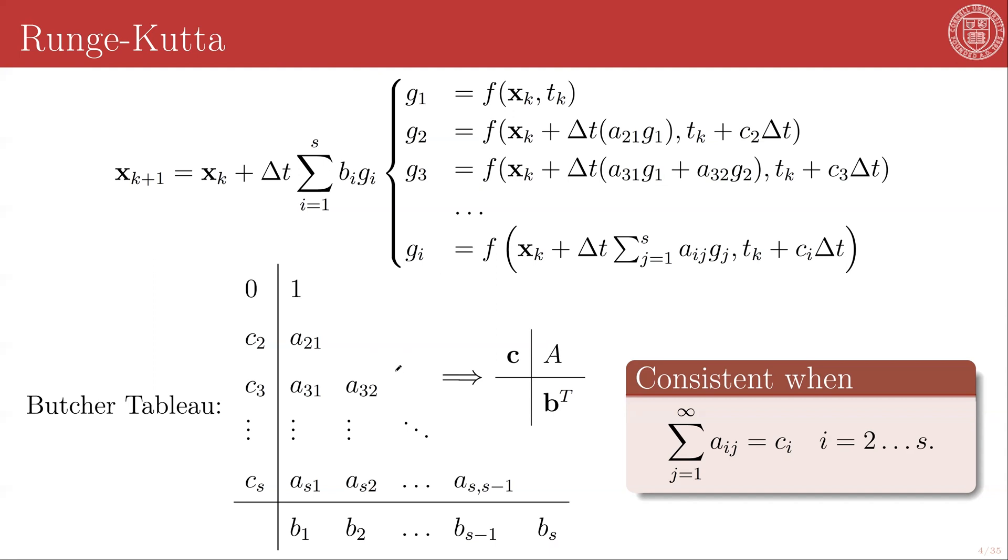However, A does not need to be lower triangular. A can be completely filled. And if there are non-zero values above the diagonal, then the Runge-Kutta method will be implicit. And once again, you will very likely be forced to do numerical iteration within each time step in order to define these functions.